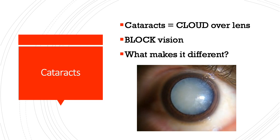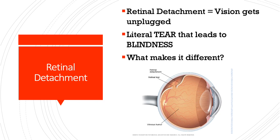People with cataracts usually complain of a more progressive loss of vision — it may get harder to see at night, and they may complain of glare. Usually the biggest difference is you can actually see that cloud over the lens. Cataracts are generally seen in older people. Patients have two options: change their lifestyle, get a stronger glasses prescription, stop driving at night, or have surgery to remove the cataract or replace the lens.